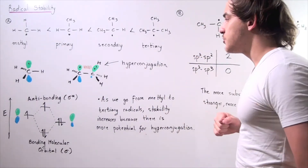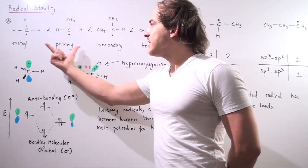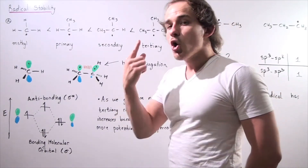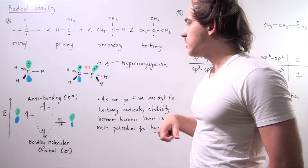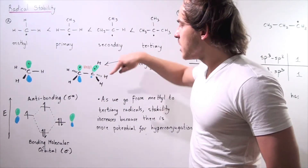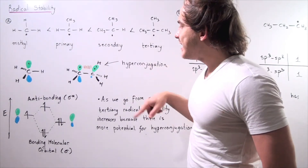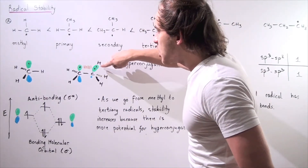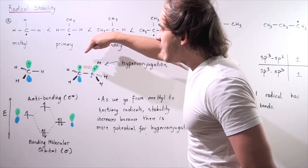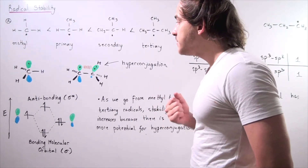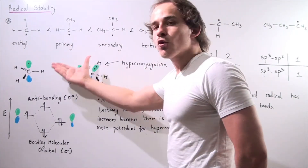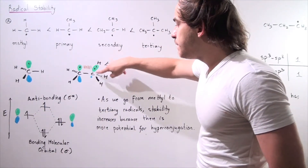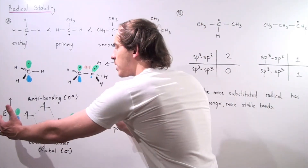Let's recall what hyperconjugation is by comparing the methyl and primary structures. In the primary structure, we have our central carbon with a 2P orbital that has one electron in the non-bonding 2P orbital. We have two H atoms and a methyl group with three H atoms, and each carbon-H bond is sp3 hybridized — fully filled with two electrons. Because the 2P orbital is only halfway filled, there's room for interaction with the fully filled sp3 hybridized orbital, and this interaction is relatively stabilizing. This is known as hyperconjugation.